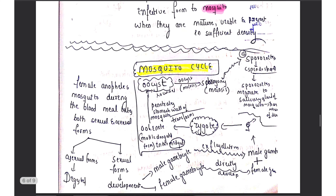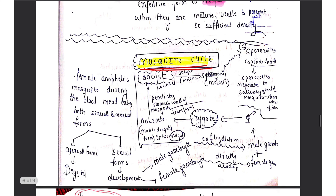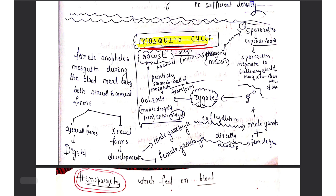Now moving on to the mosquito life cycle: the mosquito takes a blood meal from an infected patient and ingests the gametocytes. Once the gametocytes have entered inside the mosquito, they develop into male and female gametocytes. These male and female gametocytes inside the mosquito's body then combine and fertilize to form the zygote. This zygote further develops into the ookinete — a motile, elongated form.